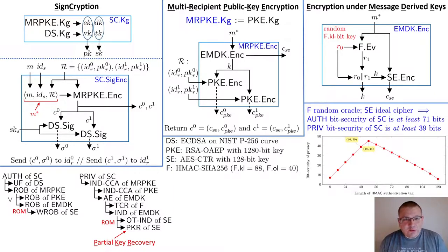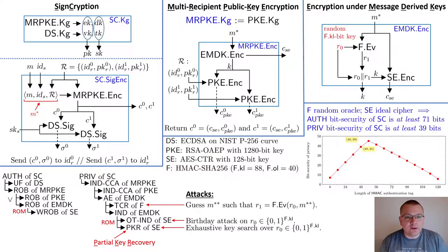For simplicity, when calculating these bit security lower bounds, we modeled function family F as a random oracle and symmetric encryption scheme SE as an ideal cipher. Finally, we showed that our derived concrete security bounds are tight by defining theoretical attacks against this encryption scheme.